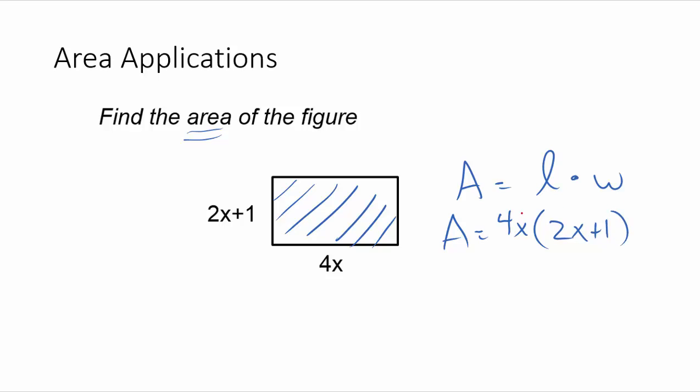So now just like before, let's move the 4x into the parentheses. So this will be 8x squared plus 4x. And now that that's distributed in there, these are not like terms, so that's as simplified as we can get with that.